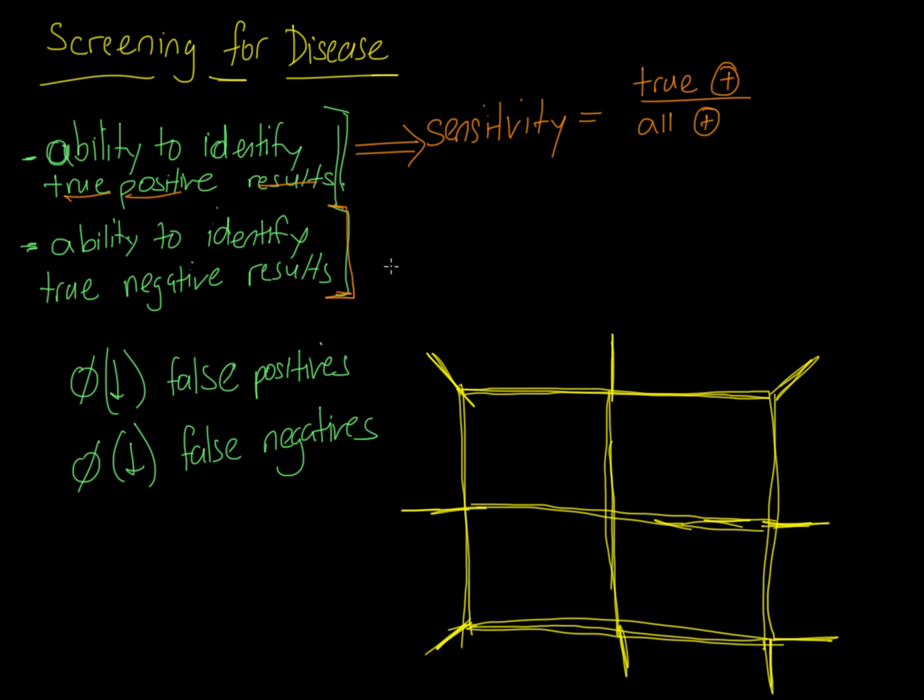And this concept, the ability of a screening test to identify true negative results, is referred to as the screening test specificity. The screening test specificity is equal to also a ratio, and it's the true negatives over all negatives. And all negatives includes the true negatives plus the false negatives as well.